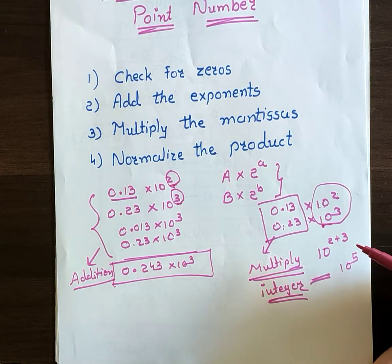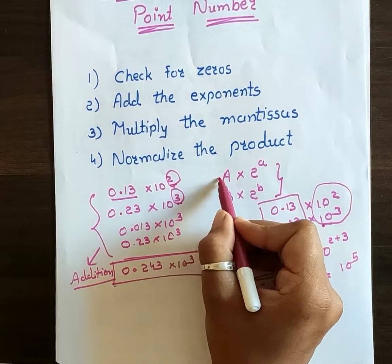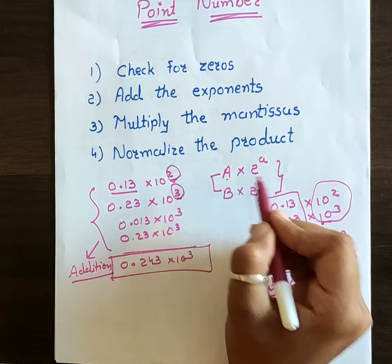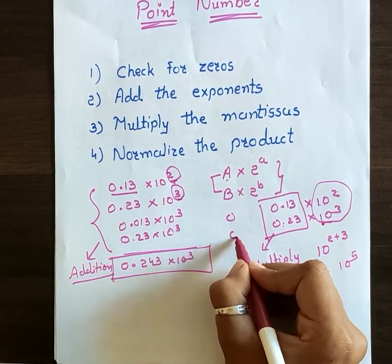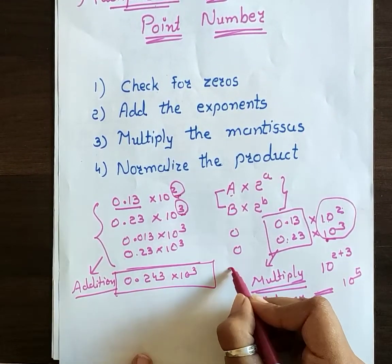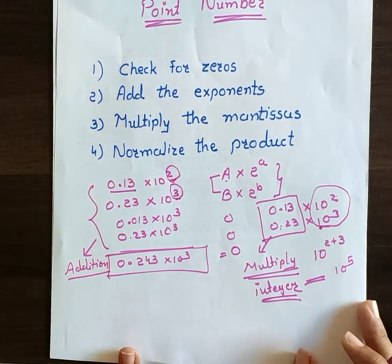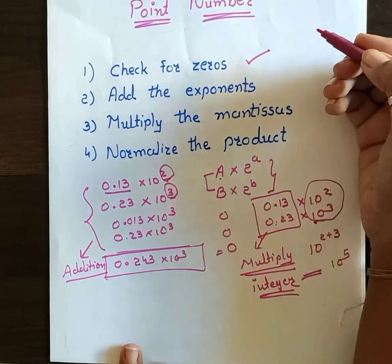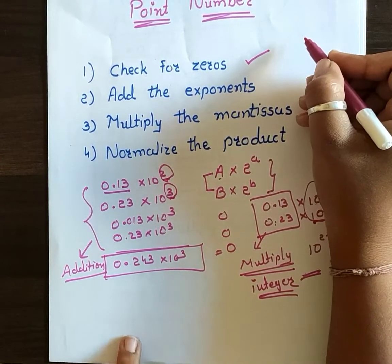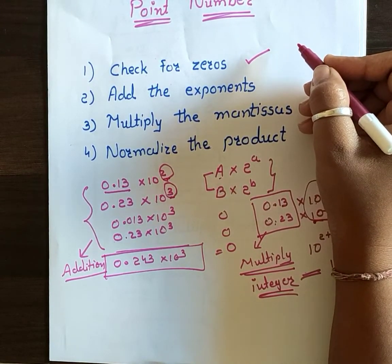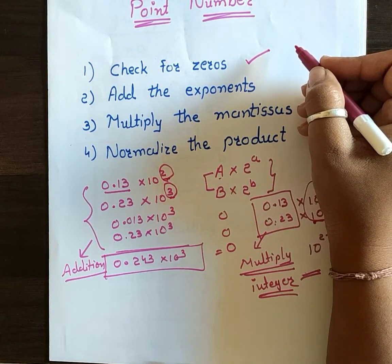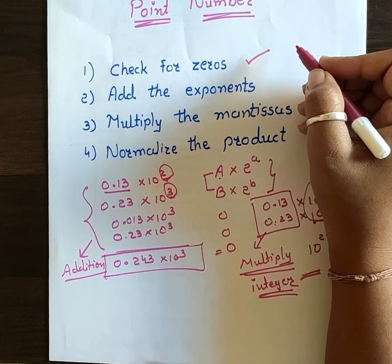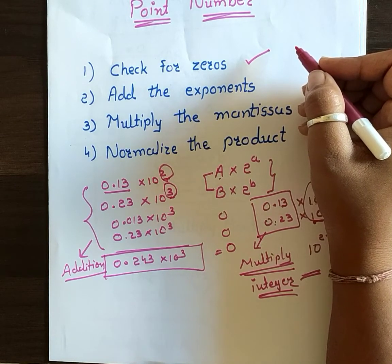So the basic steps are: multiply the mantissas in the normal way, and add the exponents. One more thing — if any one of my numbers is 0, if A equals 0 or B equals 0, then the result is 0. So we compare in four steps. First, check for zero: if either the multiplicand or multiplier is 0, then the answer is directly 0 and we terminate the operation.